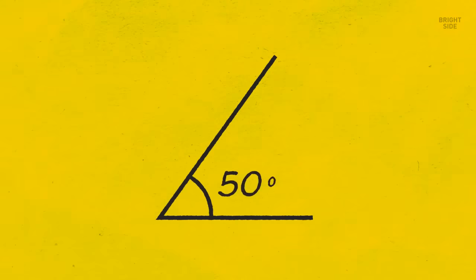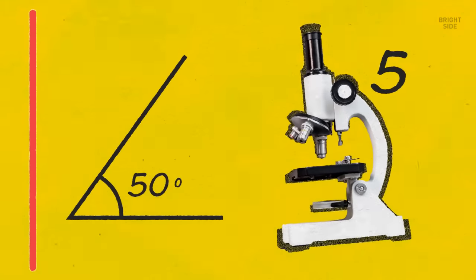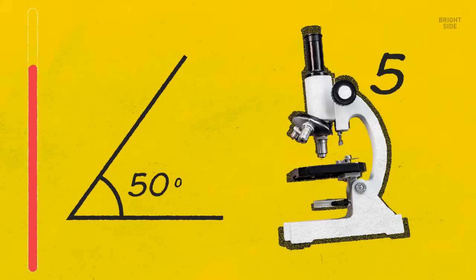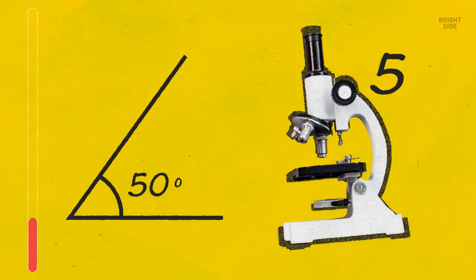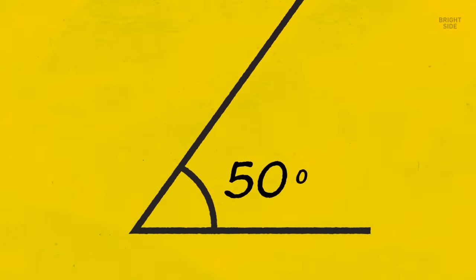How much will a 50 degrees angle measure if you look at it through a microscope that magnifies objects five times? The angle won't change. It'll still be 50 degrees.